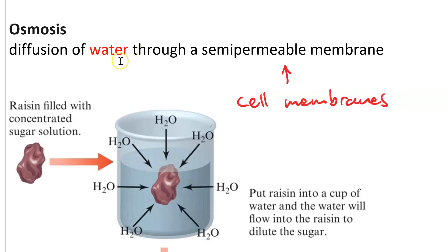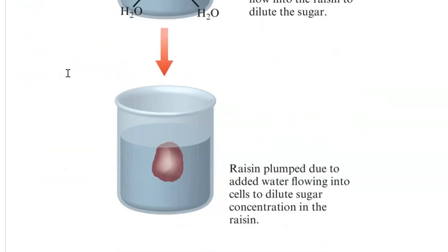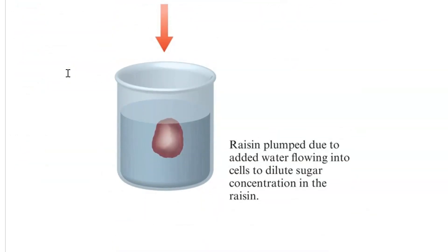Here's an example of osmosis in action. You take a raisin, which is just a grape that's been dehydrated. The outside of it is a semipermeable membrane. Inside, there's a lot of sugar and very little water. So you put that in a glass of distilled water, and the water diffuses through the semipermeable membrane by osmosis. This leads to the raisin sort of re-grapifying. It gets plumped up because now there is more water on the inside.